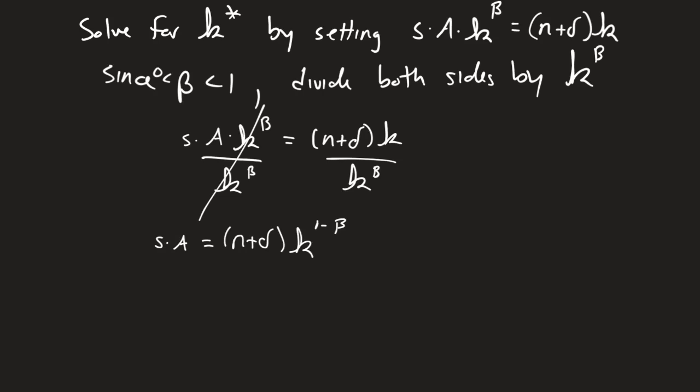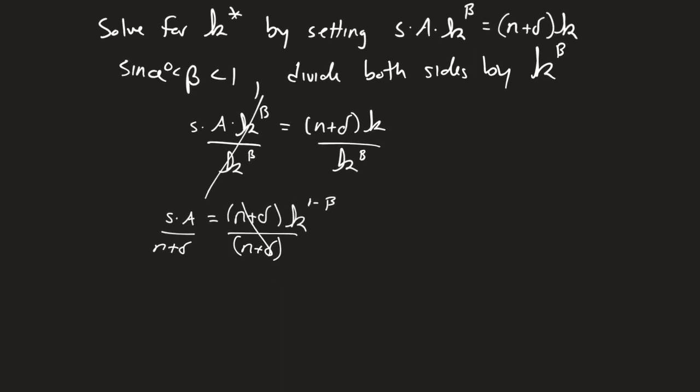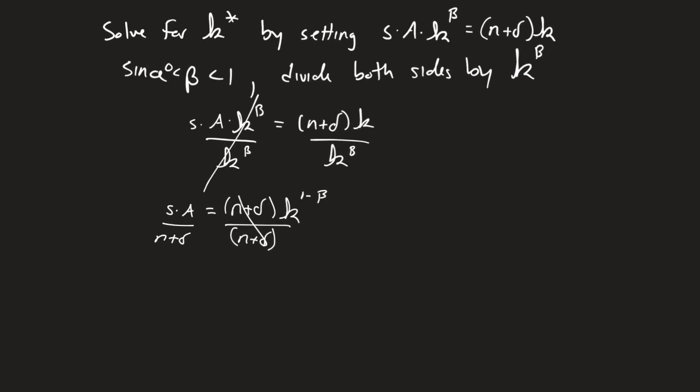We're going to divide both sides then by n plus delta. Divide by n plus delta, so those will cancel. What this is going to get us is s times a divided by n plus delta equals k to the one minus beta.